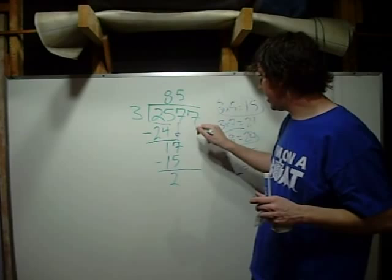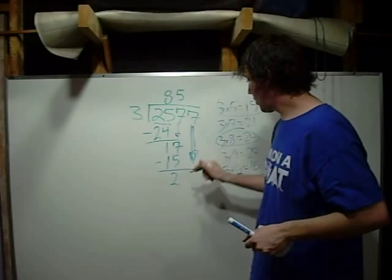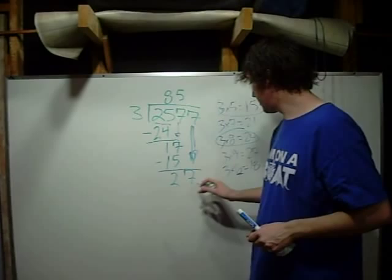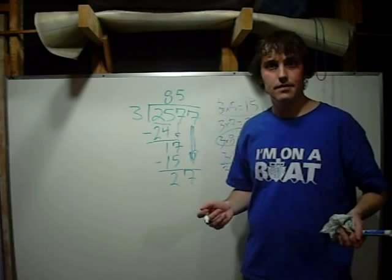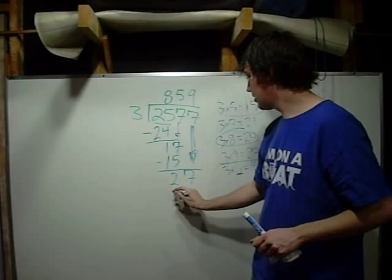We're going to bring down this 7. Okay? I guess I should probably write that in blue, keep in line with what I'm doing. We're going to bring down this 7, and so we're stuck here. How many times does 3 go into 27? Well, if you look over here, we already have the answer. 3 times 9 is 27. So we're going to put our 9 up above over here. How many times does 3 go into 27? 3 goes into 27, 9 times. 9 times 3 is 27.